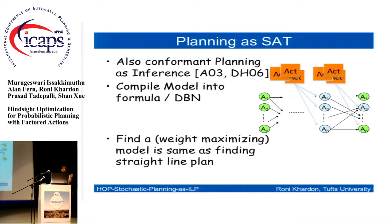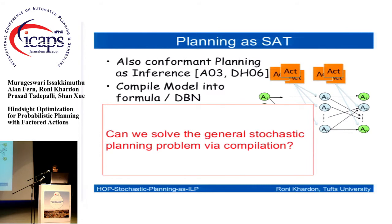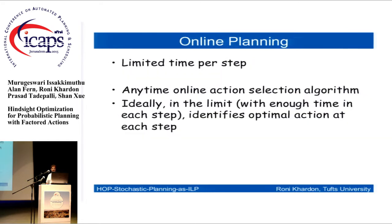I don't think I need to introduce planning as satisfiability. The idea is to take a planning problem, compile it into a propositional formula, where a satisfying assignment of the formula provides a plan. Carmel, who just spoke, extended this idea to conformant planning, where a probabilistic planning problem is compiled into a max-weighted SAT problem. You get a straight-line plan — a plan fixed in advance — with some performance guarantees. However, this is not the general stochastic planning problem, because in stochastic planning you want to choose your second action after seeing the result of the first stochastic action.